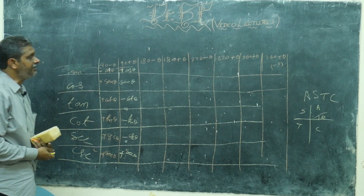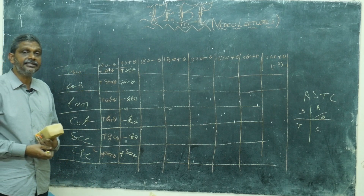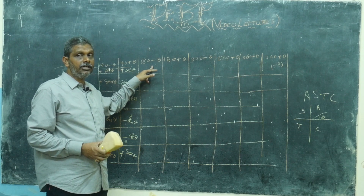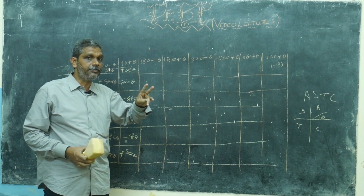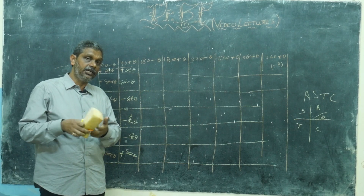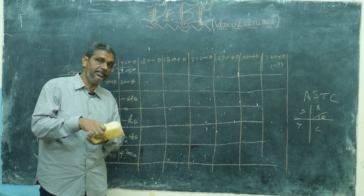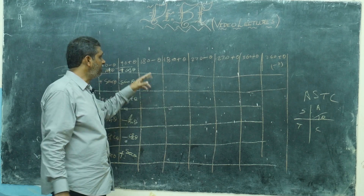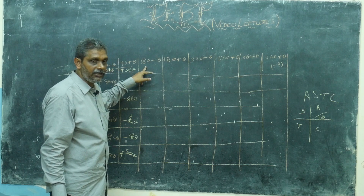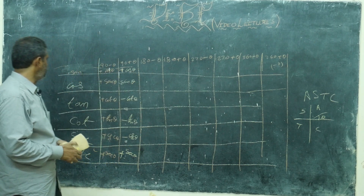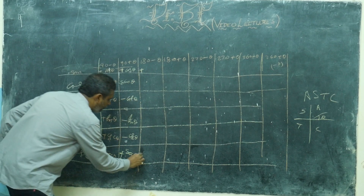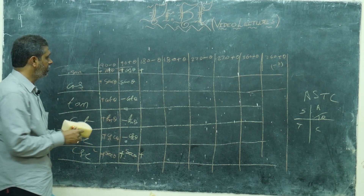Now 180 minus theta. Where does 180 minus theta lie? This fellow lies in the second quadrant. Second quadrant — who is positive? Sin. It is reciprocal, so cosecant also. These three things you can always remember. My 180 minus theta is standing in second quadrant. Sin and cosecant are positive; remaining all are negative.